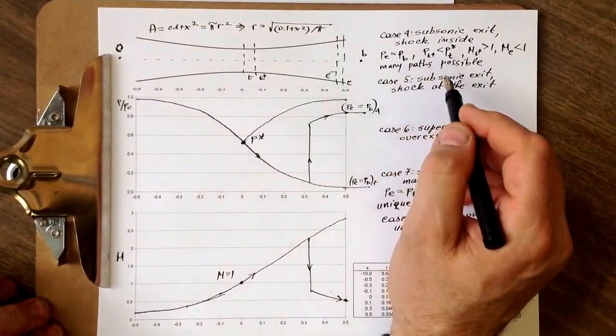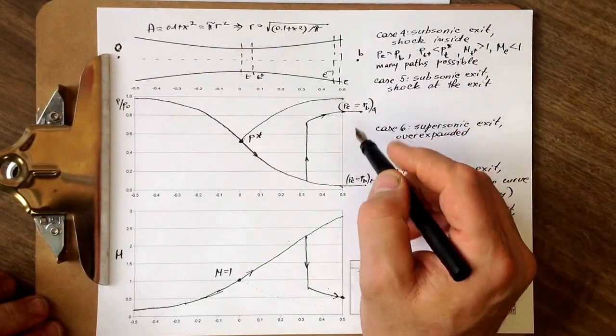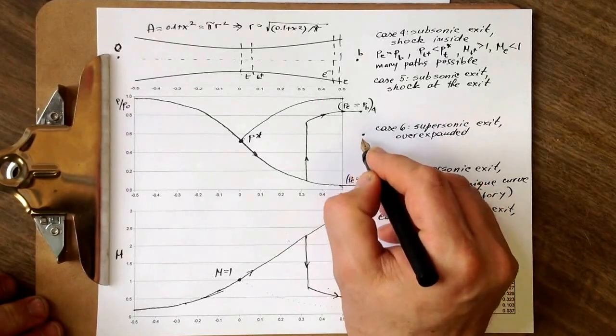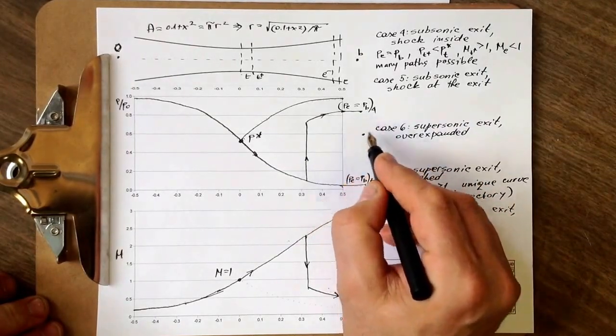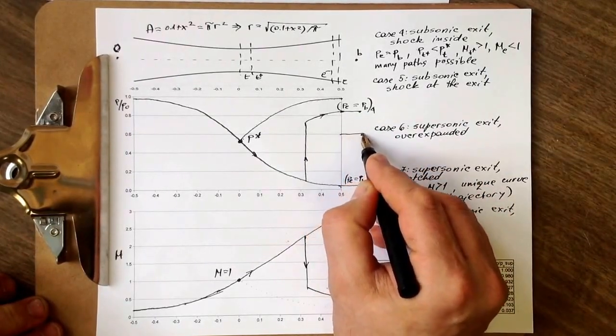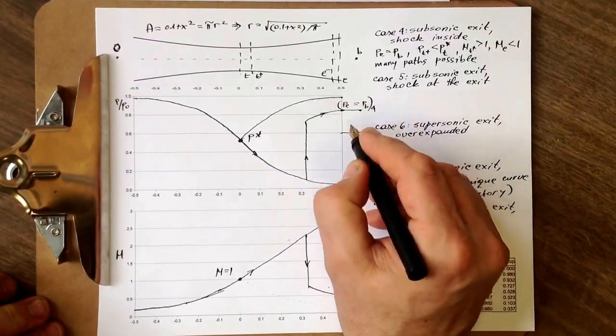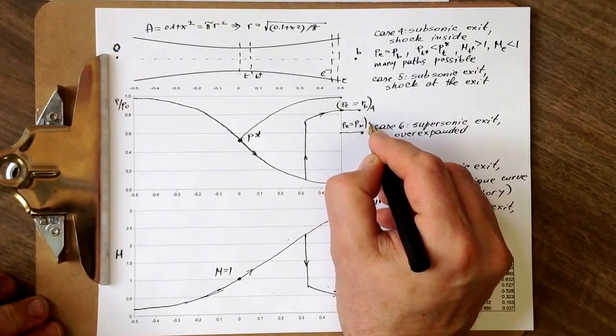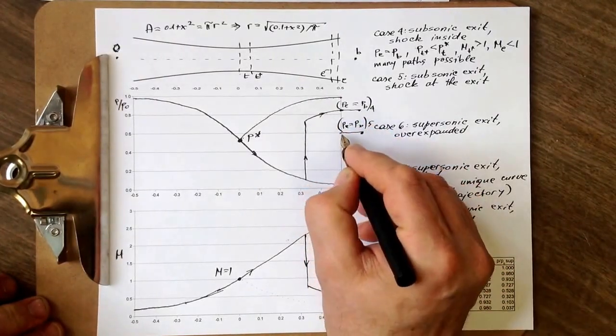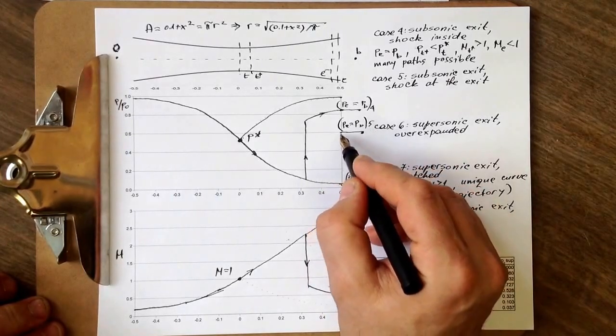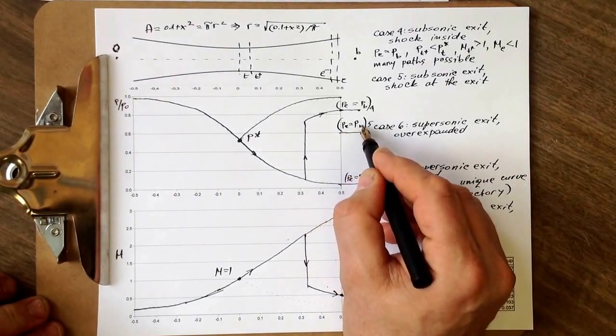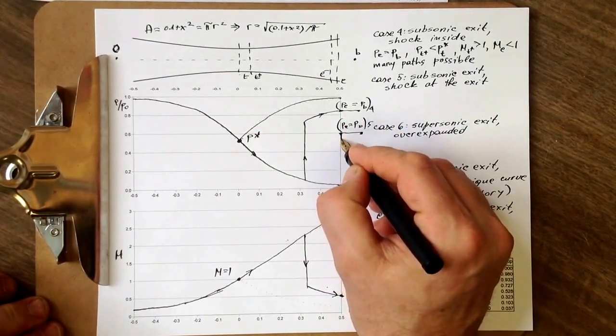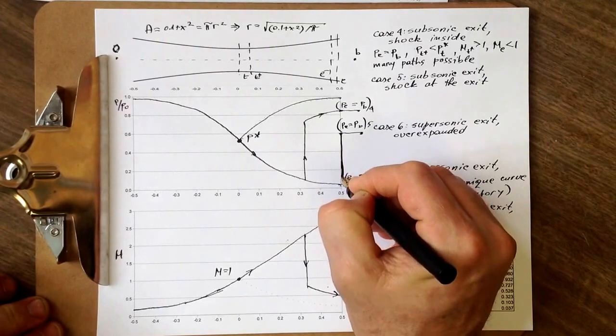So, that would be the case 4, and then case 5. As we decrease further pressure, back pressure, at some point, in each of these cases, between critical and this case, where P equals Pb5, we will have same equal exit pressure to the back pressure. Now, at some point, we reach the case where the jump is exactly at the exit.